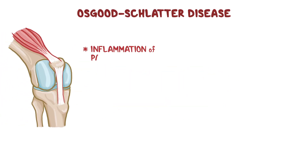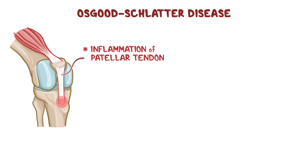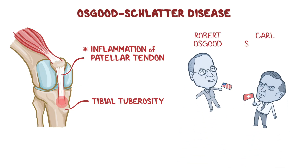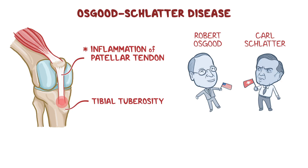Osgood-Schlatter disease is an inflammation of the patellar tendon right at the point where it inserts on the tibial tuberosity, resulting in painful swelling just below the knee. It's named after two orthopedic surgeons, the American Robert Osgood and the Swiss Carl Schlatter. The patellar tendon is sometimes also called the patellar ligament, but tendon is more common.